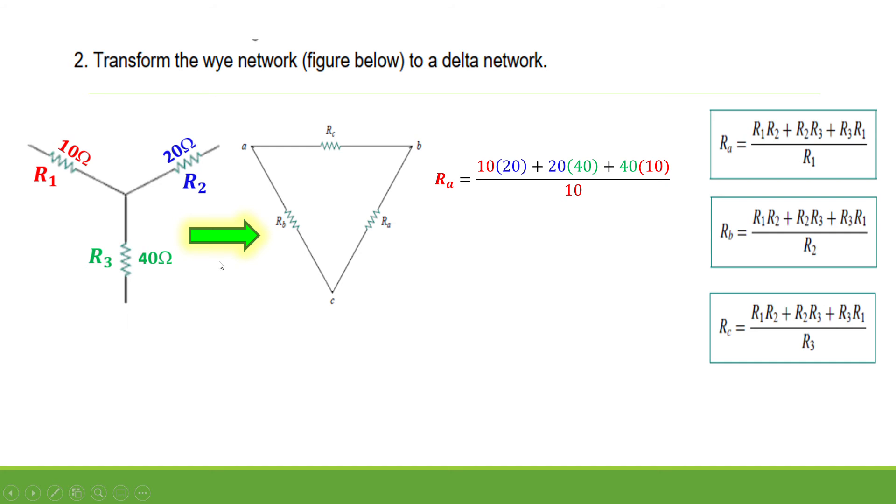To convert the Y network to Delta, using the equation on the right side: 10 multiplied by 20, plus 20 times 40, plus 40 times 10, divided by the opposite resistor, which is R sub 1, that is 10 Ohms. So the value of R sub A is 1,400 divided by 10, that is equal to 140 Ohms.